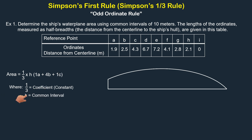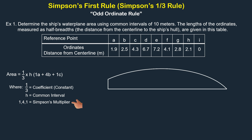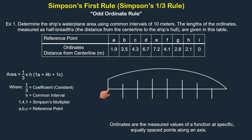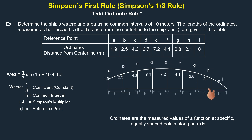H is the common interval, or the distance between ordinates. 1, 4, and 1 are Simpson's multipliers. A, B, and C are reference points along the ship's length where measurements of ordinates, such as half-breadths or GZ values, are taken. Ordinates are the measured values of a function at specific, equally spaced points along an axis.